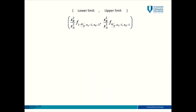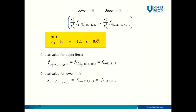Now we have two different critical values — one for the lower limit and one for the upper limit. Let's do the upper limit first. Alpha over 2 becomes 0.025, and A minus 1 becomes 11 and B minus 1 becomes 9. So we need to find F(0.025, 11, 9) from the F distribution table. Please open your formula book and find table 7.